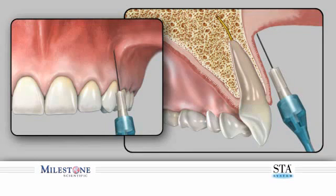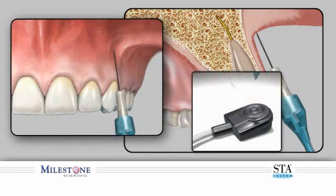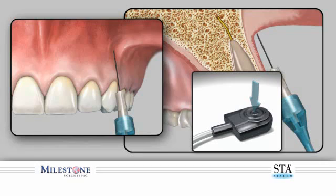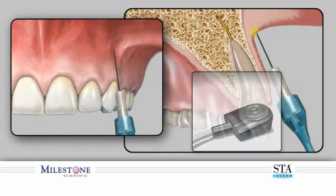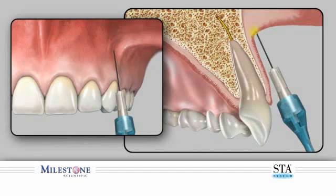Just prior to needle insertion, initiate cruise control by depressing the foot control lightly. After three beeps, the STA system will announce cruise. Upon hearing the cruise announcement, remove your foot from the foot control pedal if you desire to use the cruise feature. This begins the anesthetic flow to the injection site.